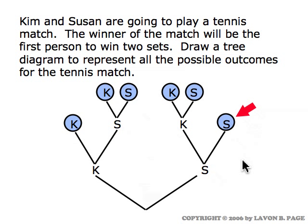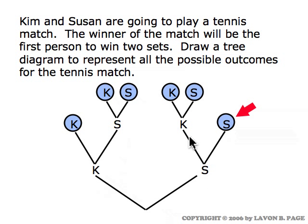The six outcomes are represented by the six blue circles. To run through the six possibilities: Kim might win the match in two sets, Susan might win the match in two sets, or Kim wins the first set, Susan the second, and Kim the third, or Kim first and Susan the next two, or Susan wins the first and Kim the next two, or Susan wins the first, Kim the second, and Susan the third. Six possibilities for the way the match plays out, unlike the three-game baseball series where there were eight possibilities.